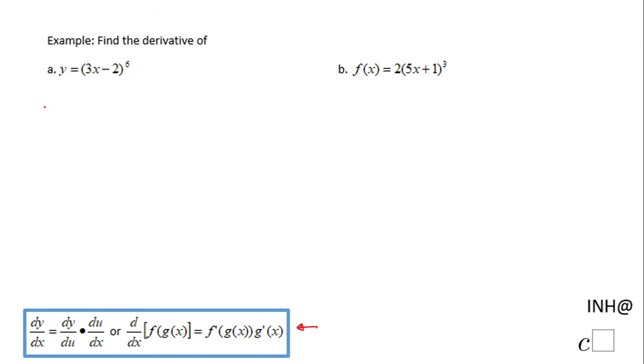I'm going to call it y prime or dy over dx if you want. So we need to find the derivative with respect to x of the quantity (3x - 2) to the 6th power. And like I said, I'm going to use the chain rule.